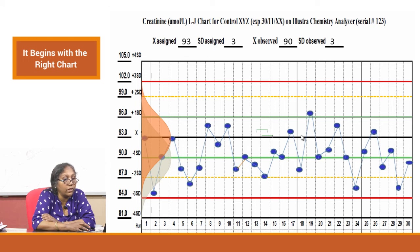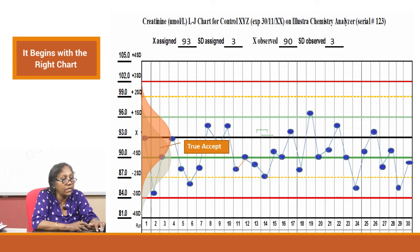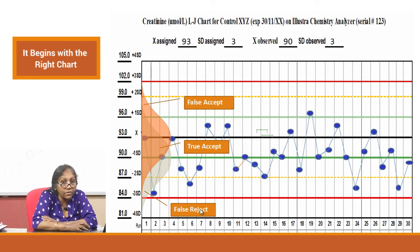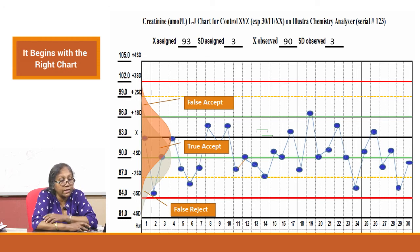Looking at the other direction: with the wrong mean of 93, runs that are actually fine appear as warnings and get falsely rejected, while truly problematic runs in the shifted region get falsely accepted. There are false acceptances and false rejections happening if you do not define your mean correctly. These will become false rejects on one side, and wrong acceptances on the other.